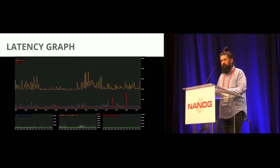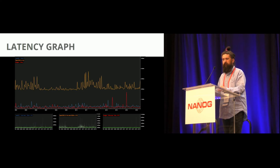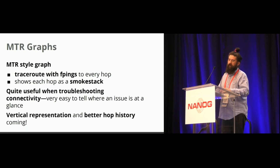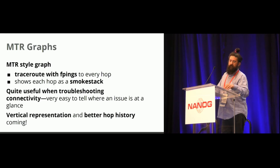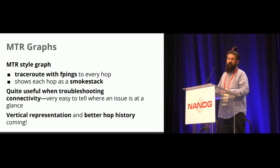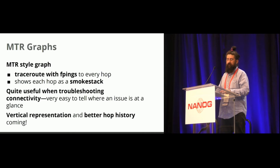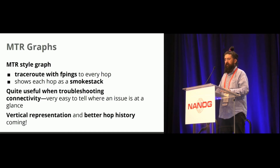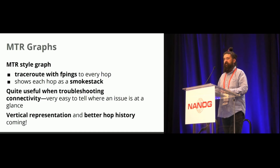When you drill down on any of the latency graphs, you get smoke snaps for all the configured hosts we're pinging at the same time, and you can see the loss at the bottom — similar to a familiar Smokeping-style graph. MTR does a traceroute, then fpings every hop along the way and shows it as a smokestack. It's currently a bit goofy because the only way to do it without root was to run traceroute, which uses UDP, while fping uses ICMP, and we've noticed those packets take different paths more than I expected. Hopefully that gets resolved.